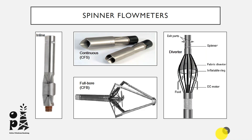Let's first discuss the types of spinner flow meters. The first type is the inline flow meter, which uses helical or turbine spinners with small diameter spinners. They can be used to log in completions with restricted diameters, tubing, scaled-up wells, and other restricted completions.